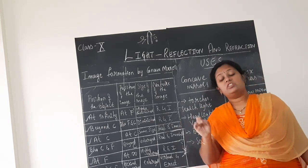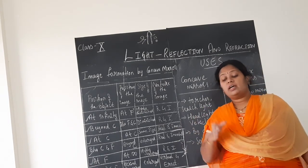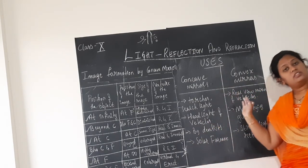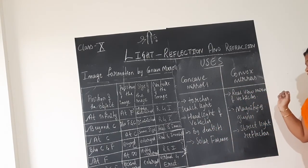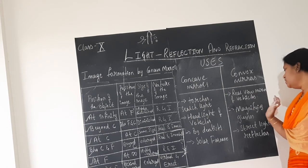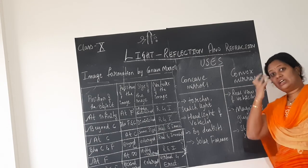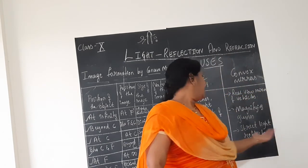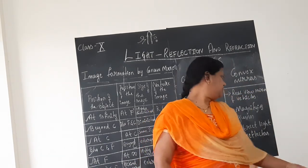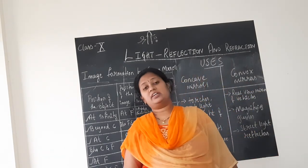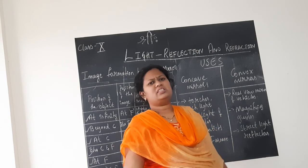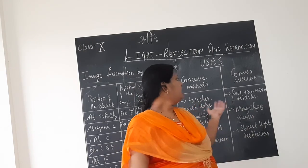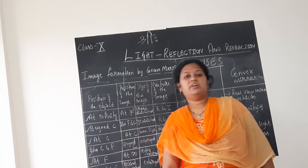They may ask you which type of mirror is used in the rear view mirror of vehicles. You should say it is convex mirror — that is the divergent mirror. Apart from that, it is used in sunglasses and magnifying glasses. And also in street light reflectors. You can see as many uses as you want about the concave mirror and the convex mirror.